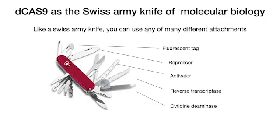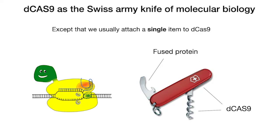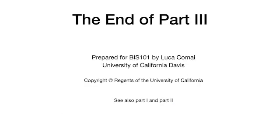In summary, you can think of D-Cas9 fusions as the Swiss army knives of molecular biology — we attach a different tool and get a new functionality. There is an important distinction: we usually attach a single item to D-Cas9. This is the end of part 3.